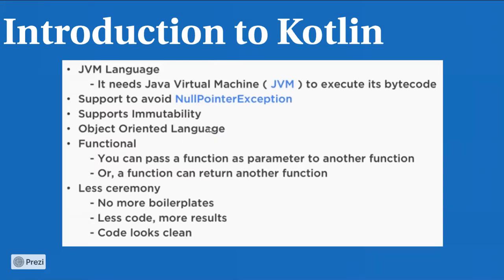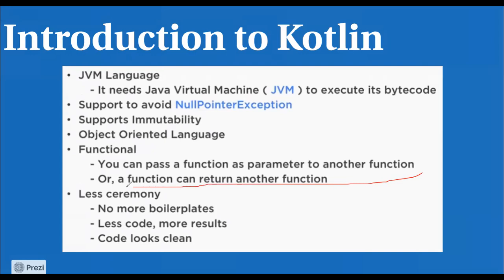Kotlin is an object-oriented language. All of you have studied object-oriented languages like C++ and Java — it is the same concept. Another very interesting thing is that it is also functional, meaning you can pass a function as a parameter to another function, and a function can return another function.